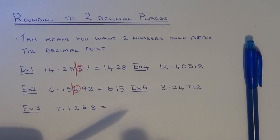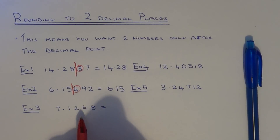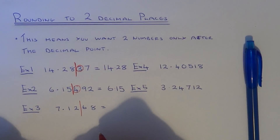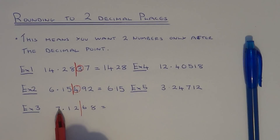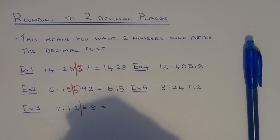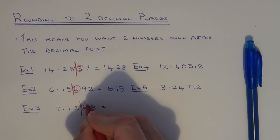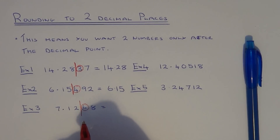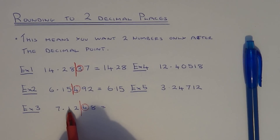Let's move on to example three. We're doing it to two decimal places, so two numbers after the decimal point. Two possibilities: 7.12 if we round down, or 7.13 if we round up. To decide which one it's closest to, just look at the first number after the line. This time it's a six, so that's five or above, so we round the number up — meaning it's closest to 7.13.